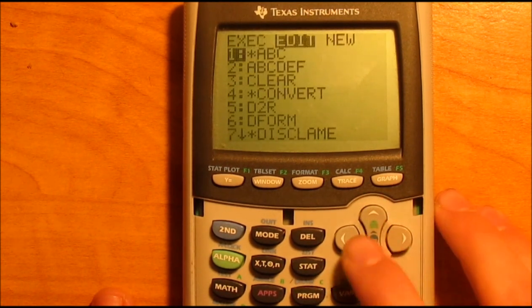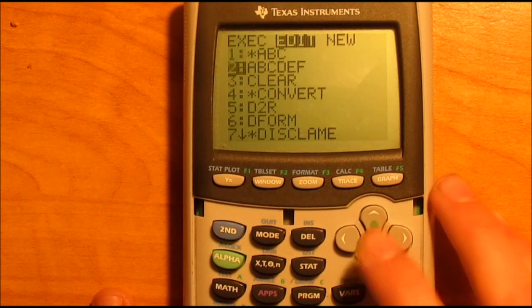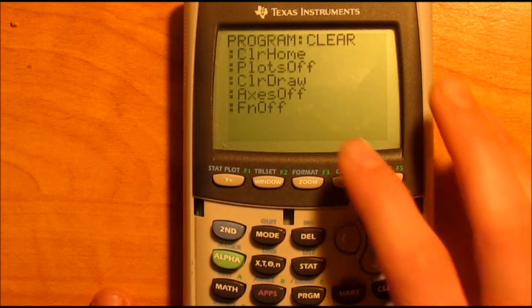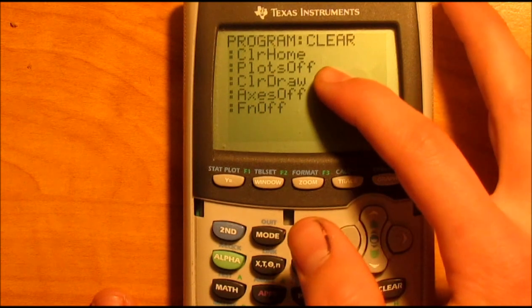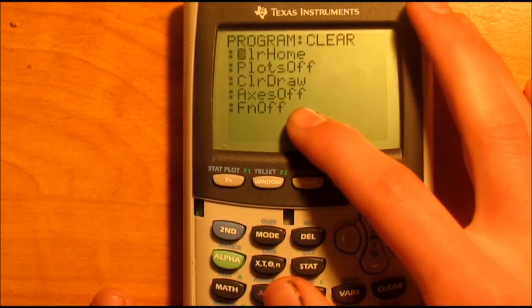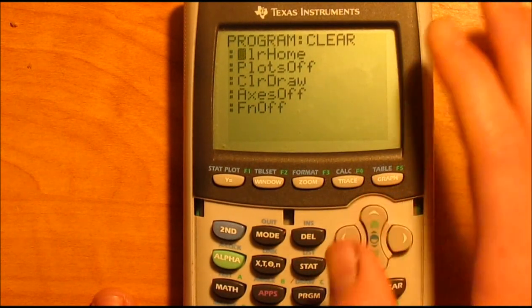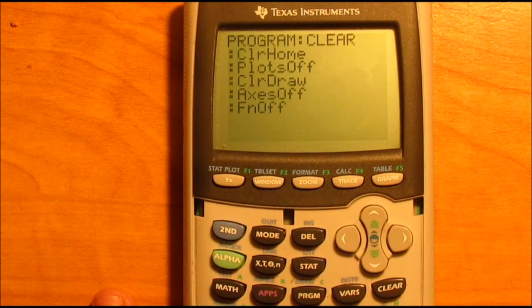First one is Clear. Instead of making a video I'm just going to show you what it is. All right, it's Clear Home, Plots Off, Clear Draw, Axes Off, FN Off. You can find all of these if you hit second zero.